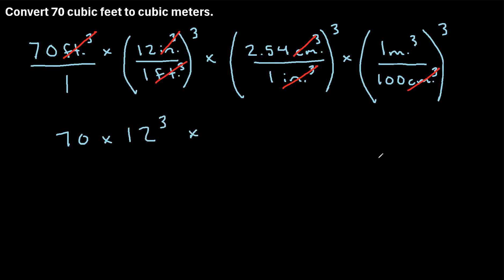And then here we'll have 2.54 cubed. And then lastly, we'll have 1 cubed, which is just 1, divided by 100 cubed.